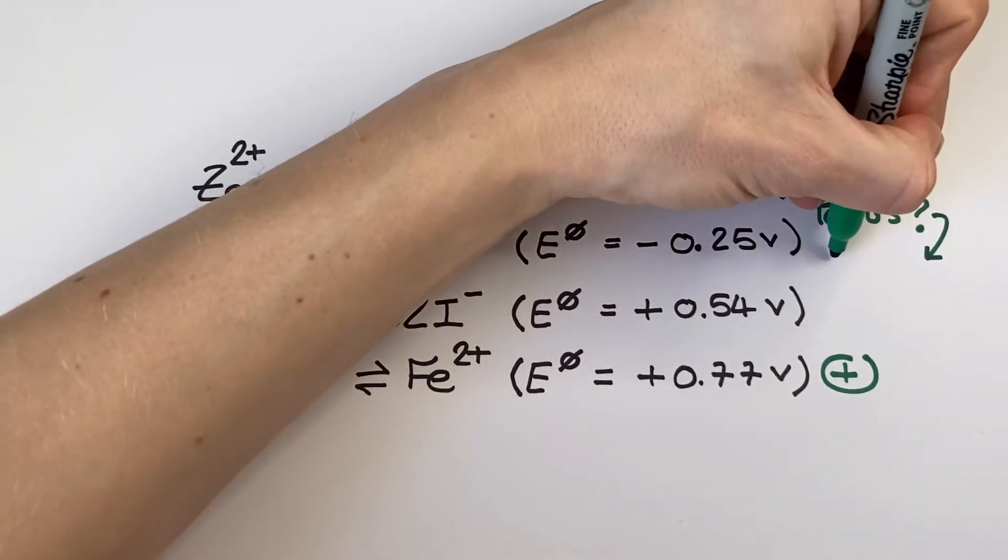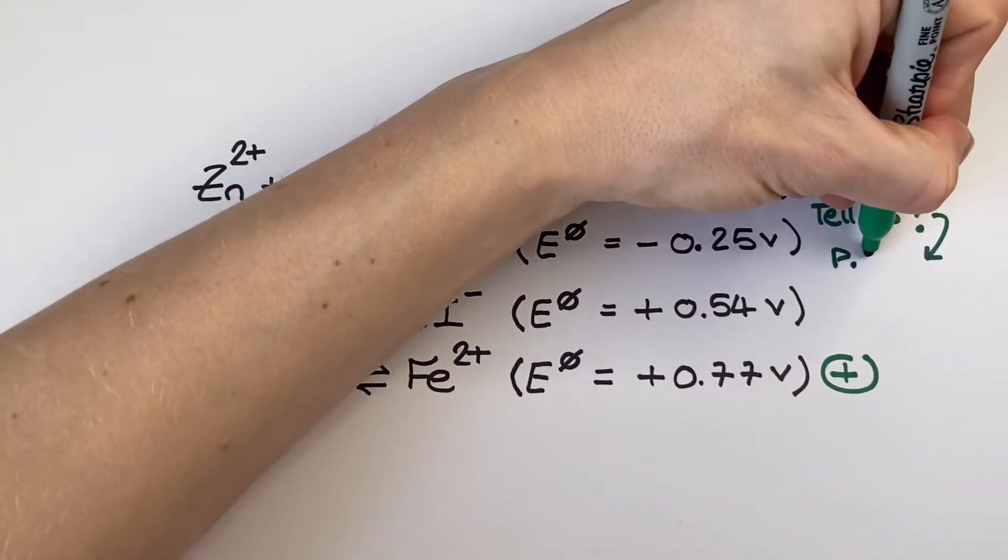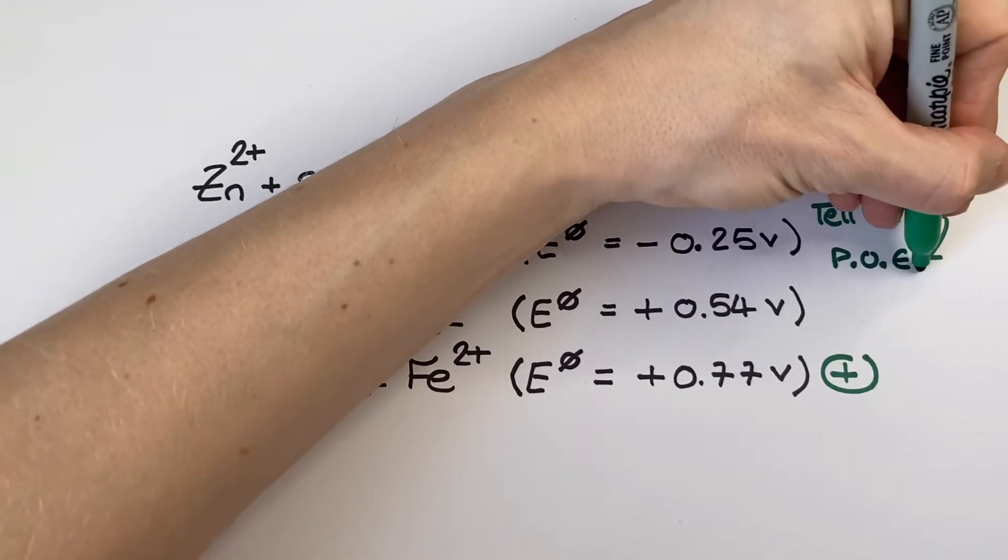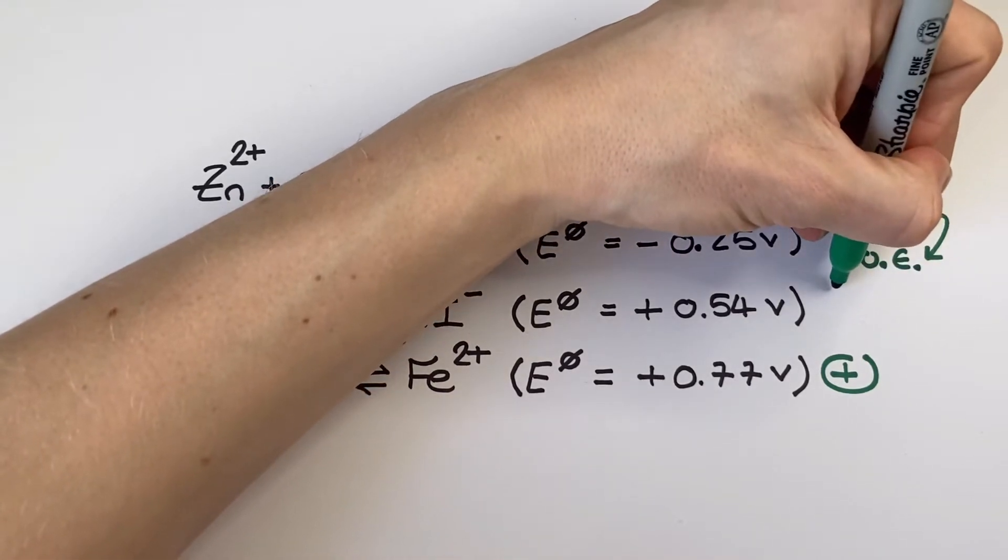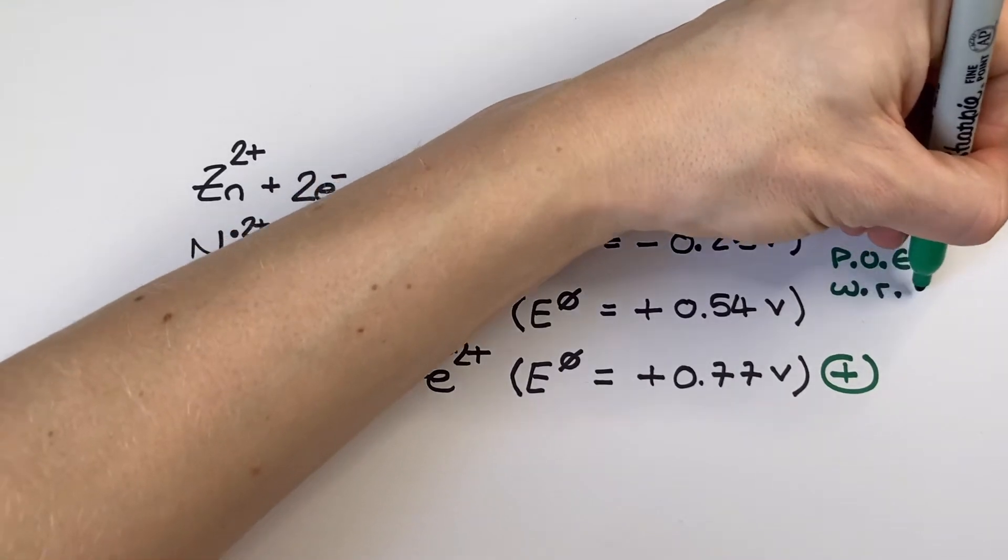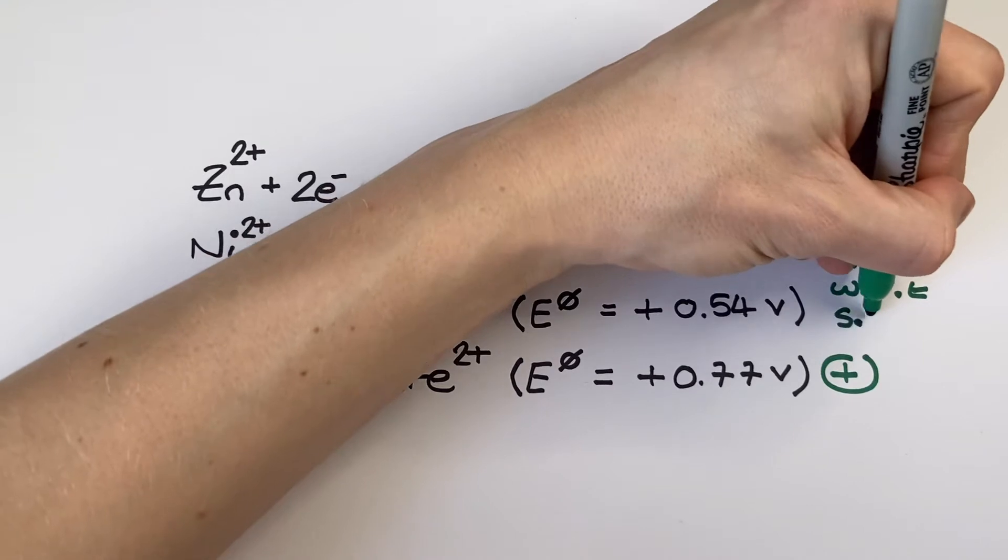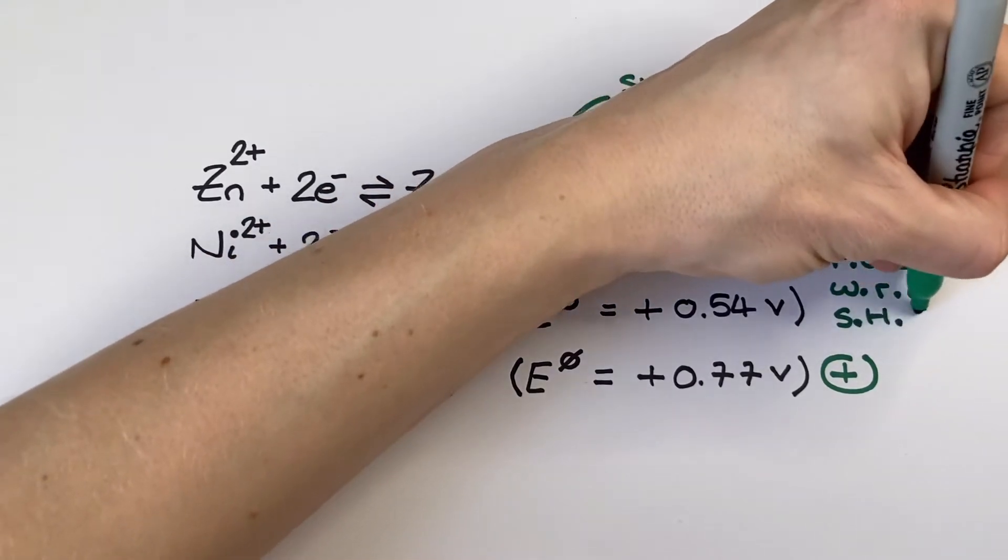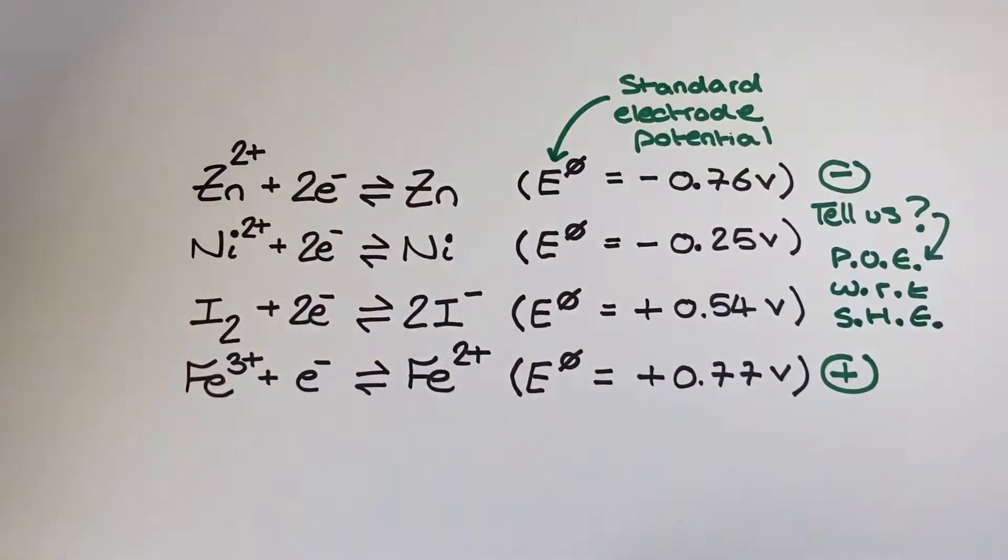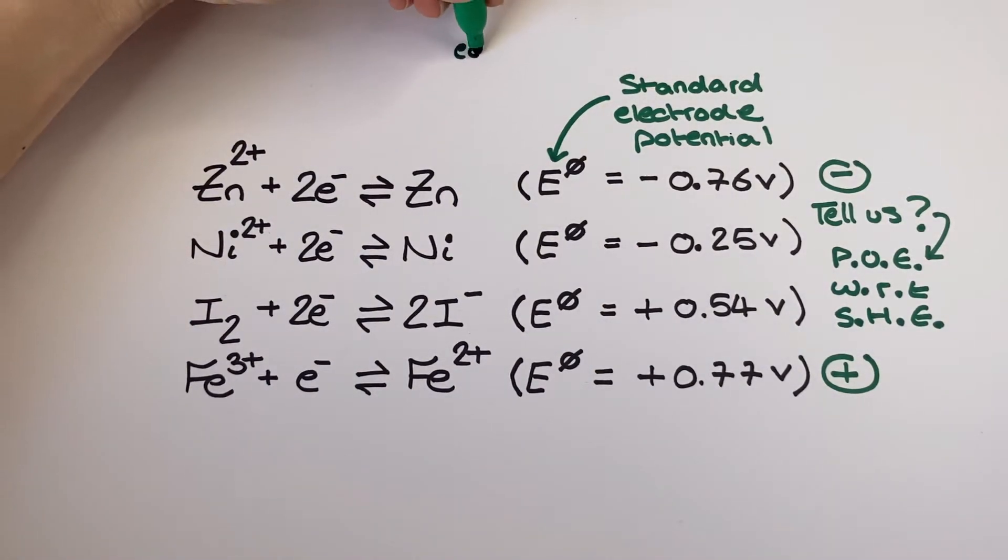So what can I learn from these standard electrode potential values? Well first off they come from the comparison of each of our half equation equilibrium to that of the hydrogen half equation equilibrium in the standard hydrogen half cell. The sign and magnitude of the electrode potential tells us if our position of equilibrium is more to the right hand side or more to the left hand side with respect to the hydrogen equilibrium.